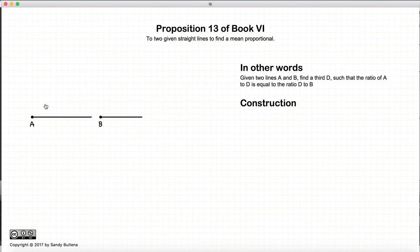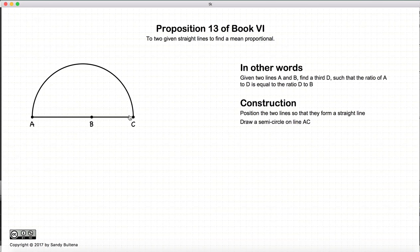So how do we do it? Well, we're starting with our two lines, A and B, and we're going to join them together so they form one straight line. So our two lines that we are now going to find the mean proportion is AB and BC. We construct a semicircle on the entire length of AC. How to do this is described in great detail in Book 1. So we have a semicircle.